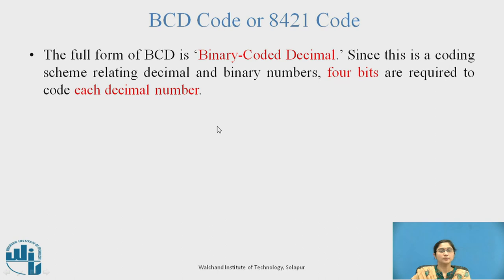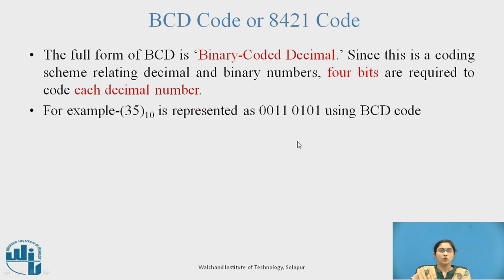The full form of BCD is Binary Coded Decimal. Since this is a coding scheme relating decimal and binary numbers, 4 bits are required to code each decimal digit. For example, 35 in base 10 is represented in BCD: for the digit 3, the binary representation is 0011 (8421), and 2 plus 1 gives 3.